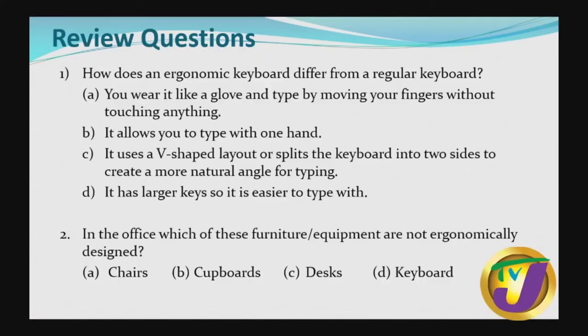Number two: in the office, which of these furniture items is not ergonomically designed? A — chairs; B — cupboards; C — desk; D — keyboard. If you have been paying attention, you will see that the correct response is B, because the question asks which are NOT ergonomically designed.